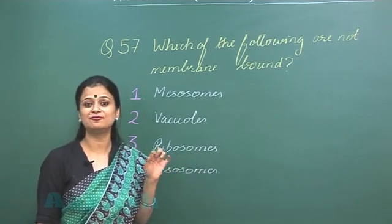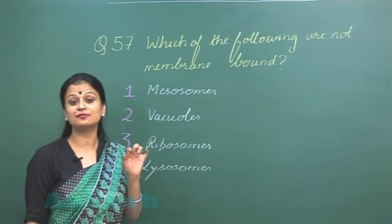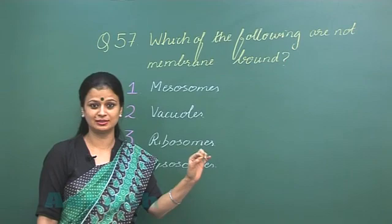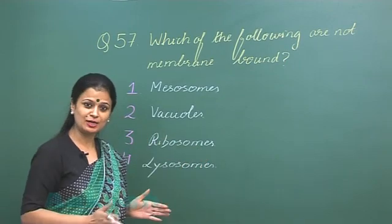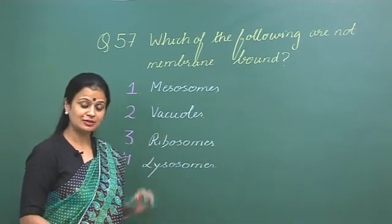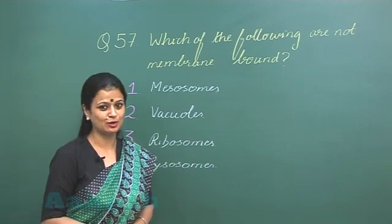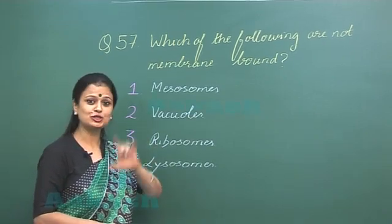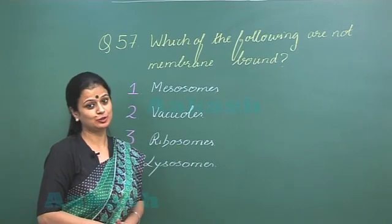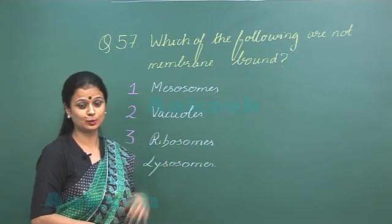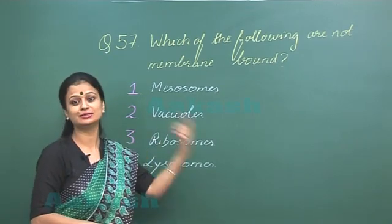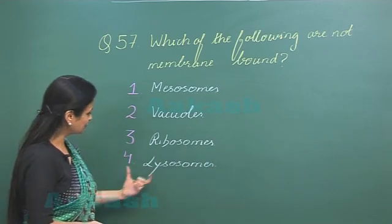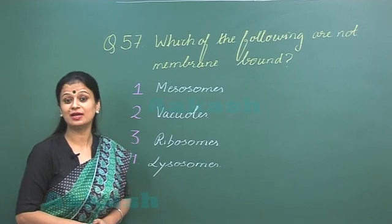Ribosomes are protein factories which are without a membrane — they are membrane-less organelles. In plants, the only non-membrane-bound organelle present is the ribosome. In animals, two are there: ribosomes and centrioles.